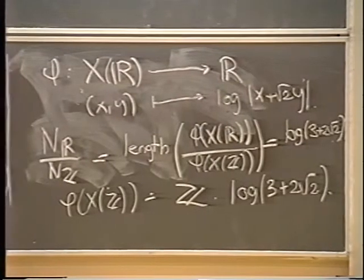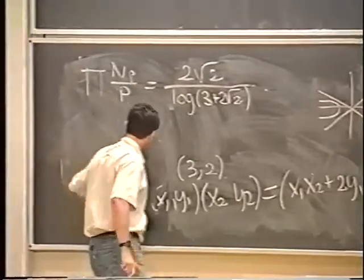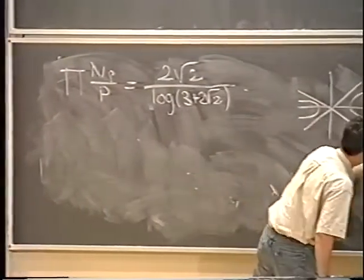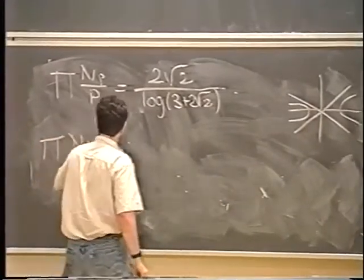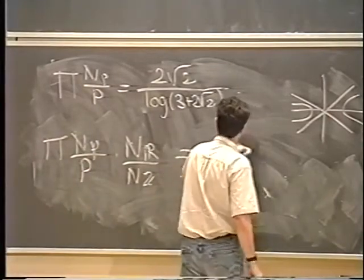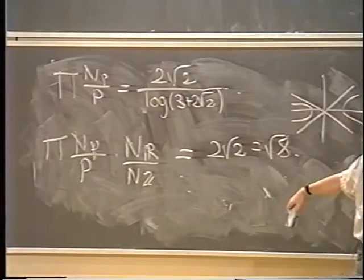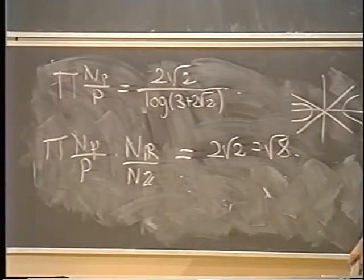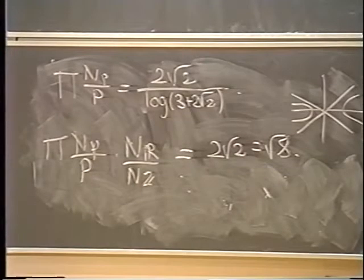Let me write down the formula that you get. You find that the product of N_p/p times N_r/N_z (only this ratio makes sense now) equals 2√2, which is also √8. You might ask why we get this √8 here. One explanation is that the formula for N_p in the first equation involved a congruence modulo 4, whereas here I'm involving a congruence modulo 8.